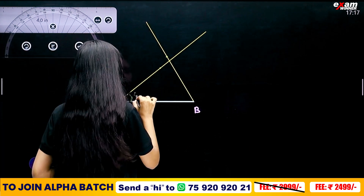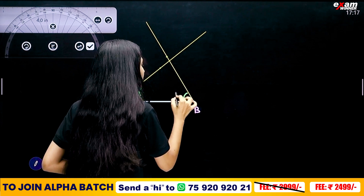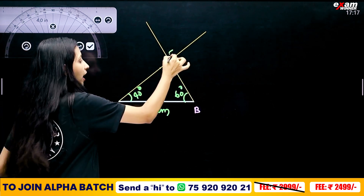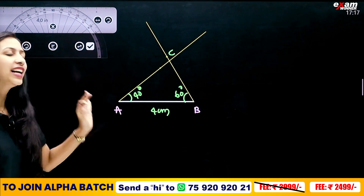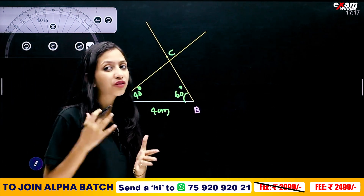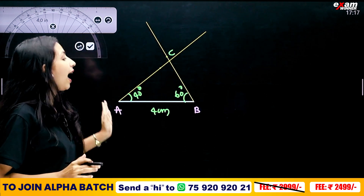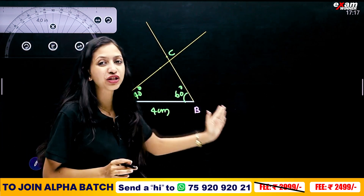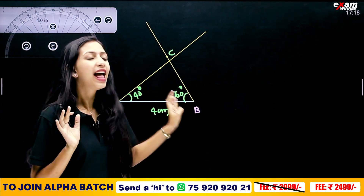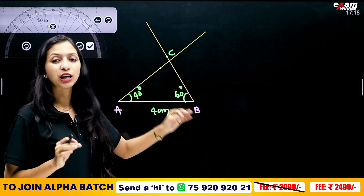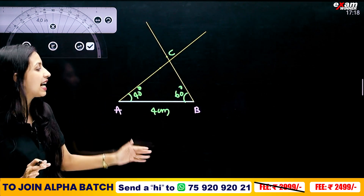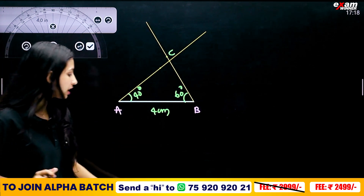This is 40 degrees and this is 60 degrees; AB is 4cm. So we have triangle ABC. Now 4 times 2 equals 8. We have one side of this triangle, and we have to get this on our scale.